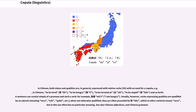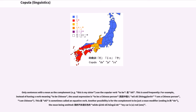In Chinese, both states and qualities are, in general, expressed with stative verbs, with no need for a copula — for example, 'lèi' (to be tired), 'è' (to be hungry), 'zài' (to be located at), 'bèn' (to be stupid). Only sentences with a noun as the complement use the copular verb 'shì' (to be). For example, instead of having a verb meaning 'to be Chinese,' the usual expression is 'to be a Chinese person': 'wǒ shì Zhōngguórén' (I am a Chinese person = I am Chinese). This 'shì' is sometimes called an equative verb. Another possibility is for the complement to be just a noun modifier ending in 'de,' the noun being omitted: 'wǒ de qìchē shì hóngsè de' (my car is a red one).